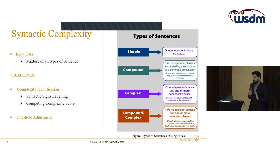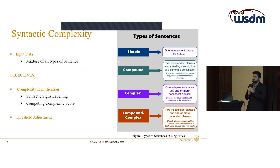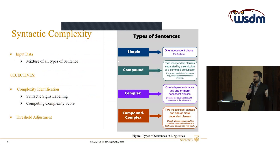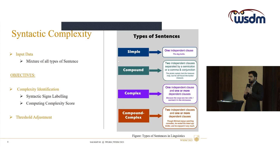Syntactic complexity refers to how complex a sentence is. Simple sentences include only one independent clause. As we go further, the structure of the sentence gets bigger and bigger — there are multiple clauses and multiple conjunctions. Whenever we process unstructured text, these compound and complex sentences are the reason why we encounter errors and issues in knowledge graph construction.